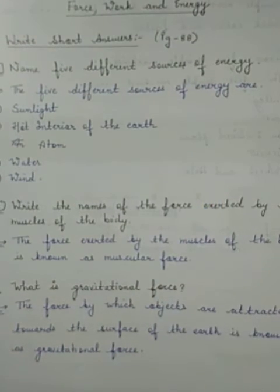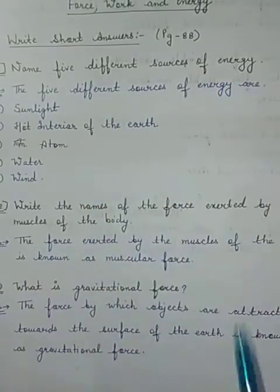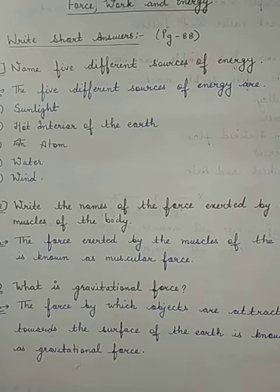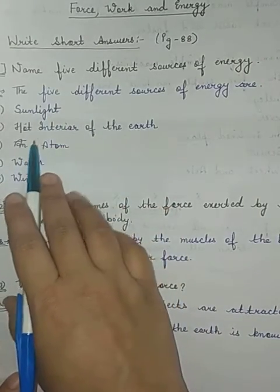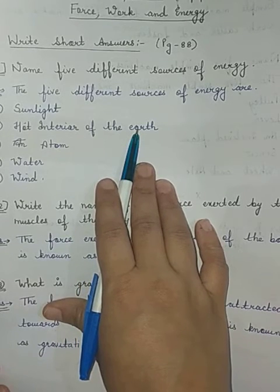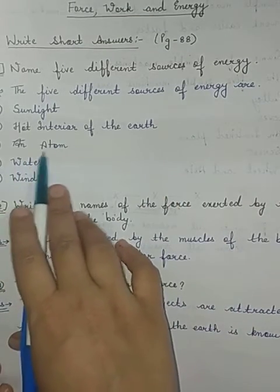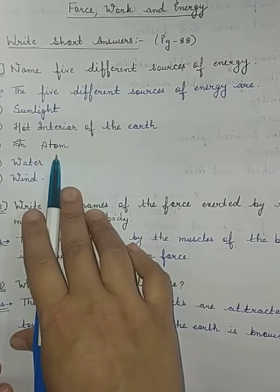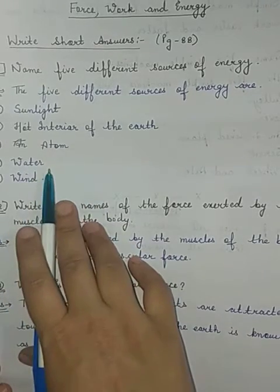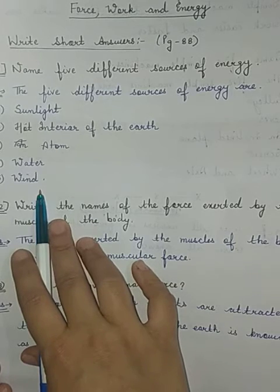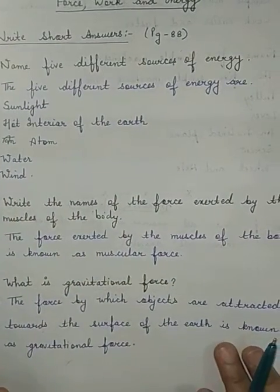The first question is: Name five different sources of energy. The five different sources of energy are: sunlight, from which you can get energy; hot interior of the earth, from inside the earth like hot water, which can be used for generation of electricity and heating purposes; atom, the smallest particle of matter, which provides energy in the form of atomic energy; water, which also provides us energy; and wind, which provides energy in the form of wind energy.